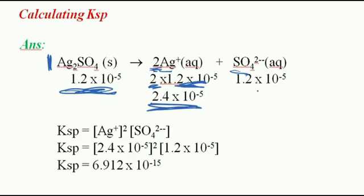So according to the same mole ratio, the sulfate, SO4 2 minus, is going to be one mole. So that is why we have the same thing, 1.2 times 10 to the power minus 5 over there.